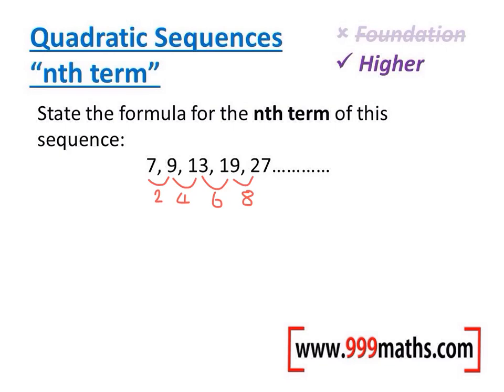Once we've found out what the difference between the numbers are, if they're not the same number, we do the double difference. And that's the difference between the differences. So between 2 and 4, the number's 2, 4 to 6 has a difference of 2, and 6 to 8 has a difference of 2. If this happens we know it's a quadratic sequence.